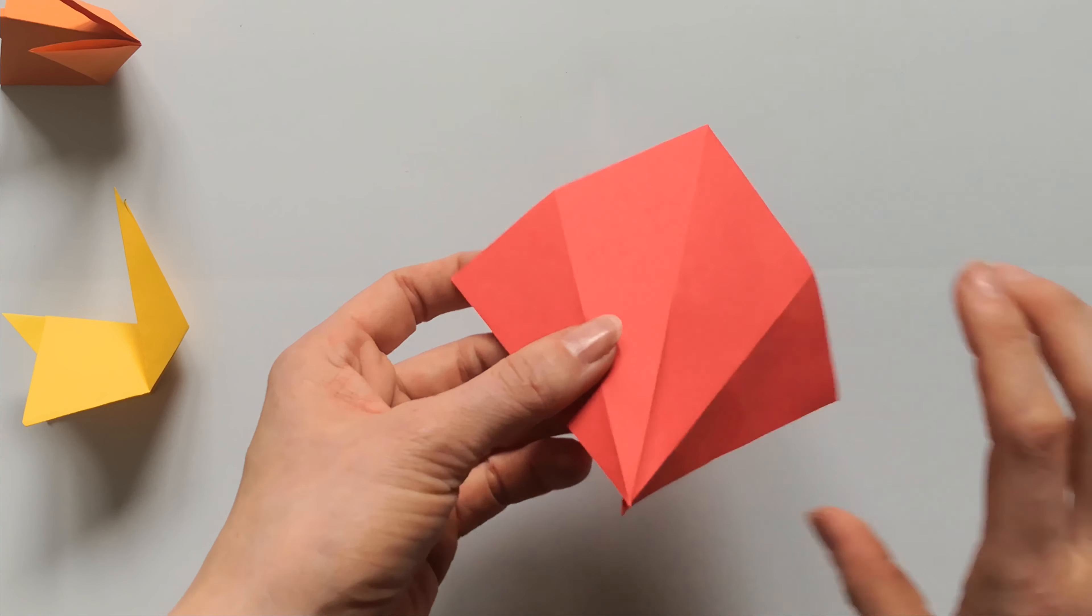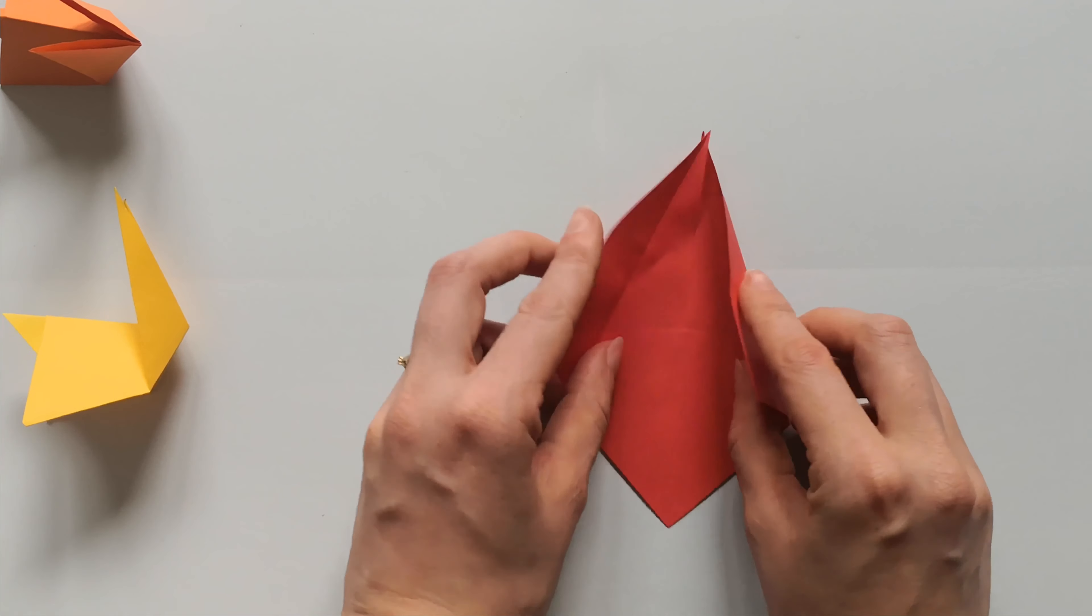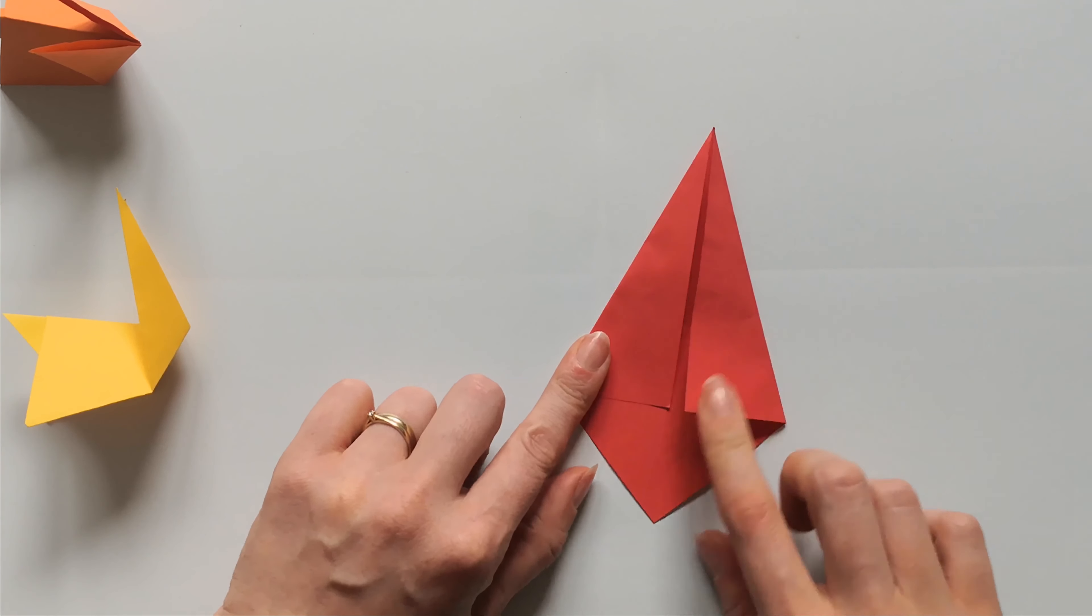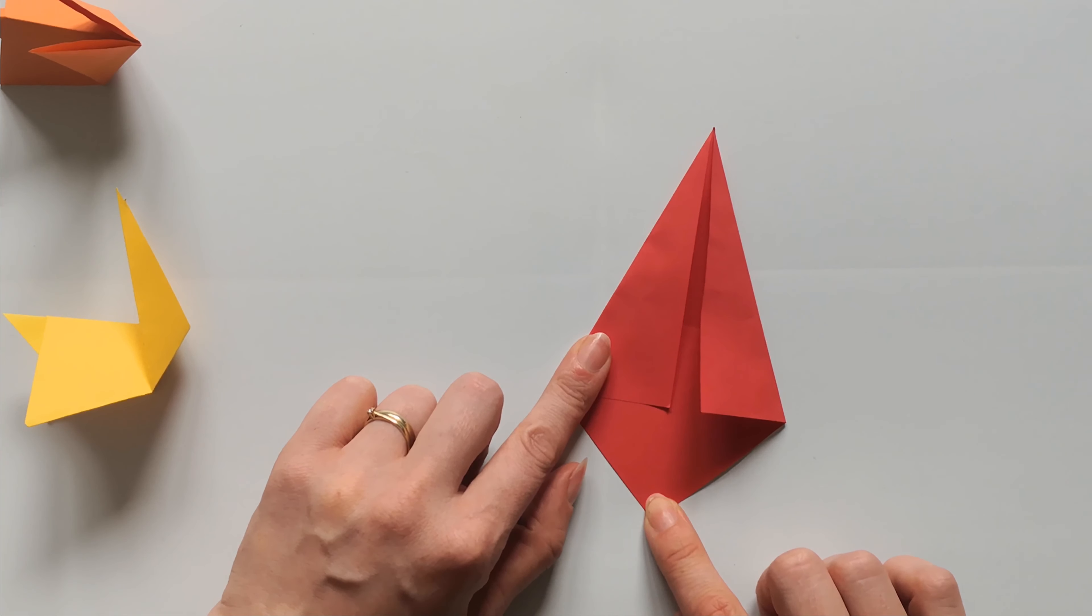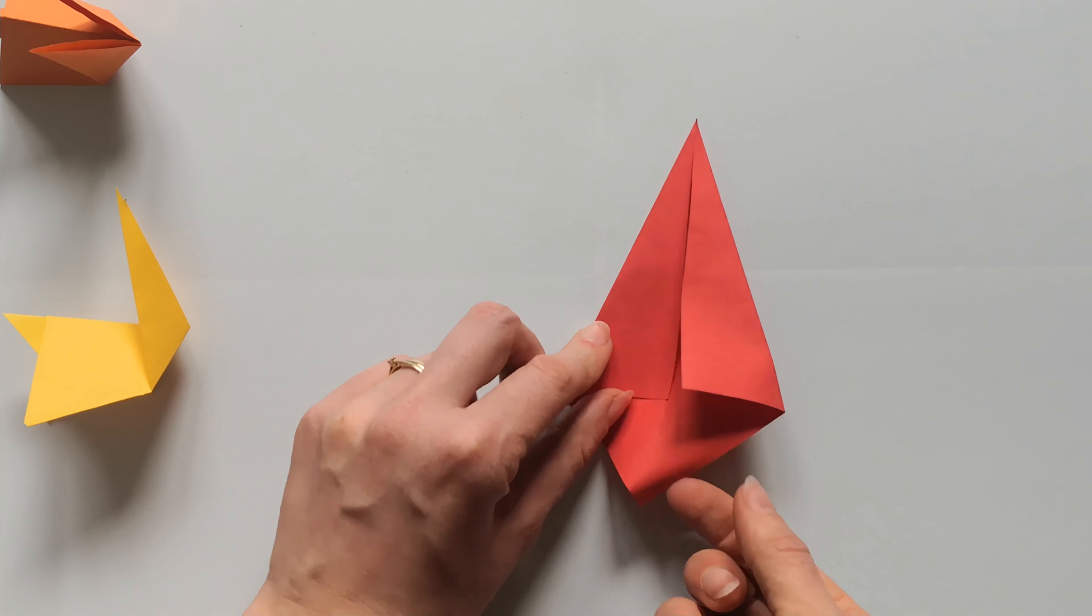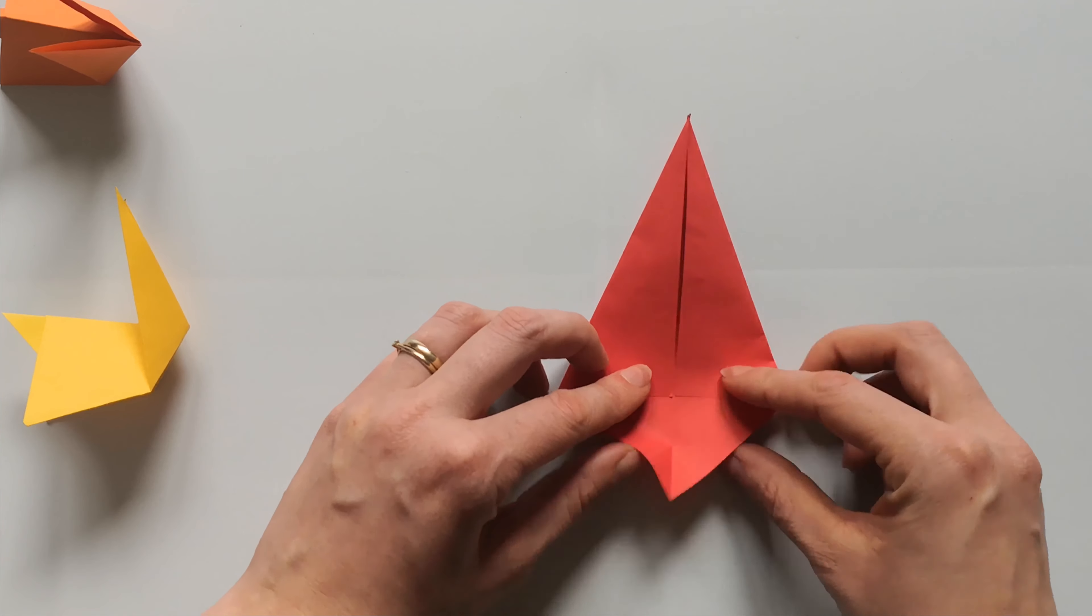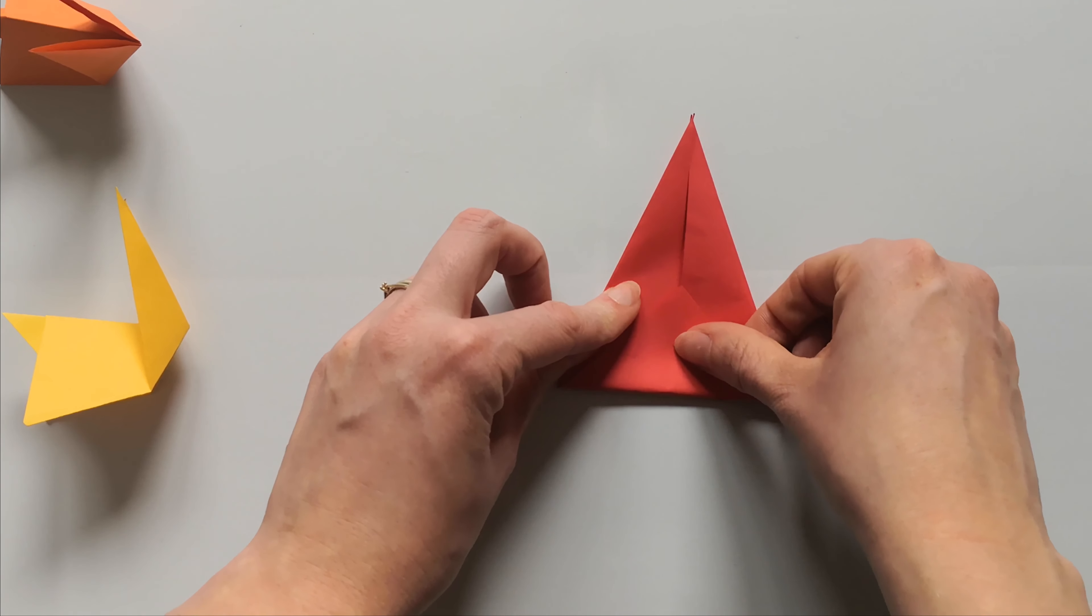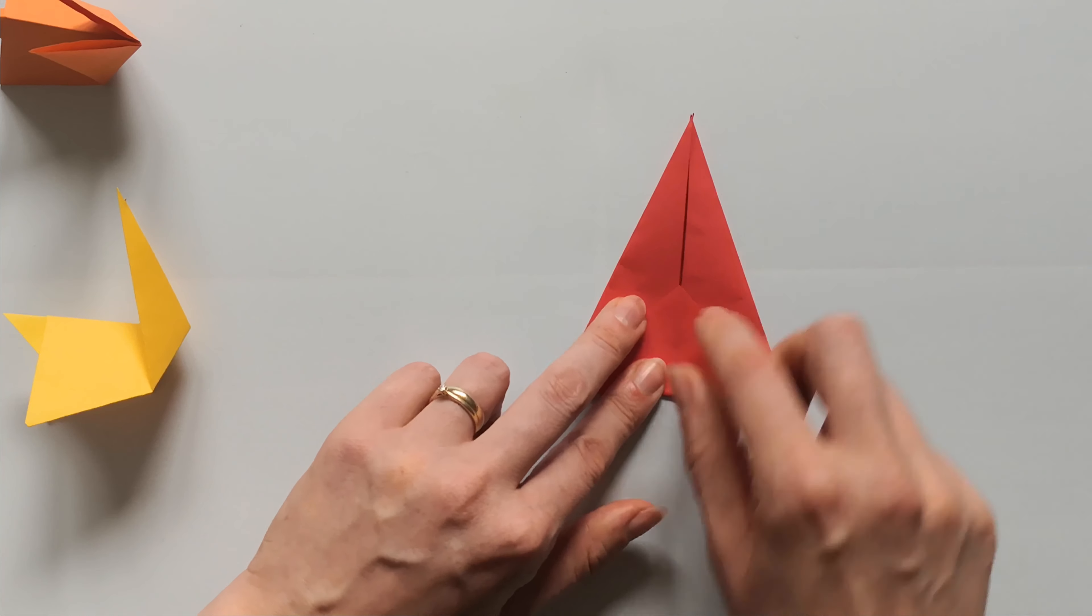Like so. And now, again, close the sides of the paper inwards. And now, fold the bottom part of the paper upwards. For this, we will just slip this part up and push it forwards and fold it in half.